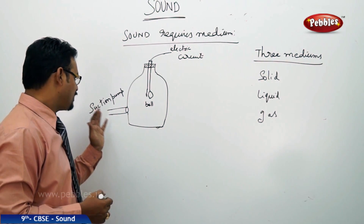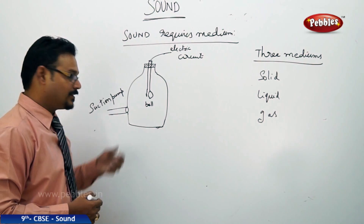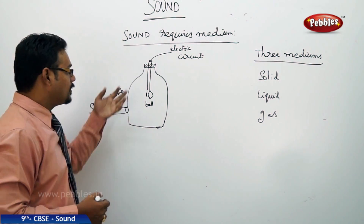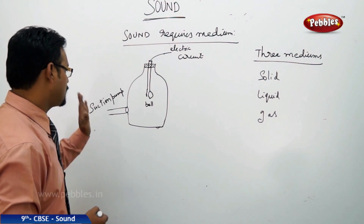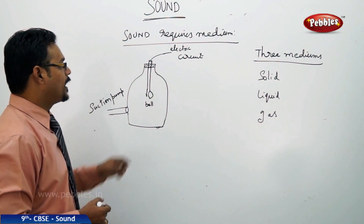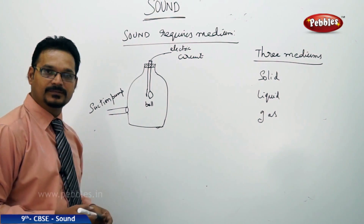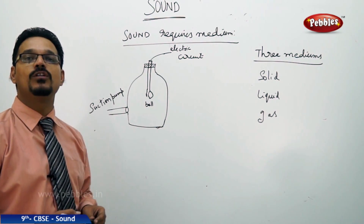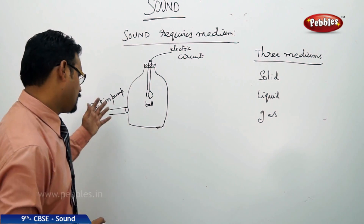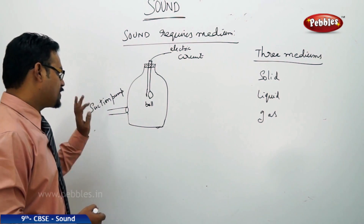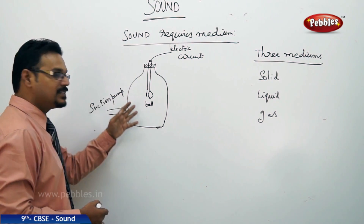The suction pump's function is to suck air out of the jar. When the suction pump is not working and the electric circuit is switched on, the bell starts ringing and you can hear the sound of the electric bell.